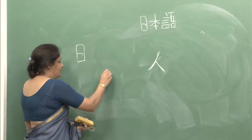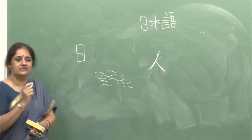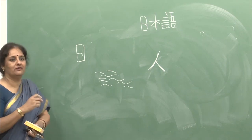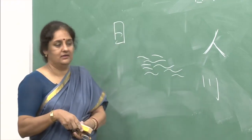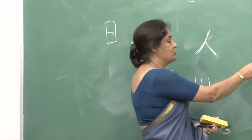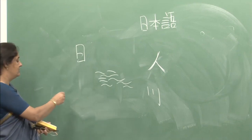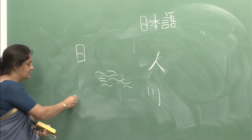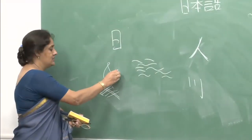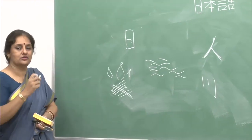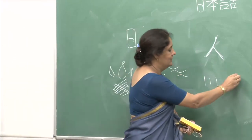If you look at this character, it is water — it looks like a river flowing. Fire is shown by depicting the logs and wood, and when it burns, this is what it looks like.